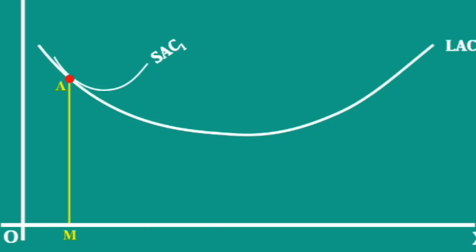Now, the firm wants to expand the output. There are two options for the firm. First option is moving down along the SAC1 and reach its minimum point B.